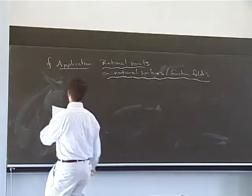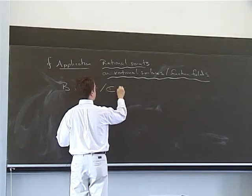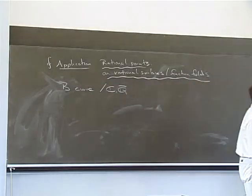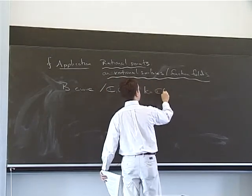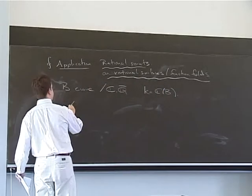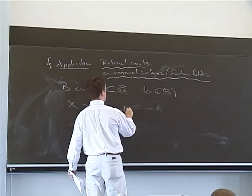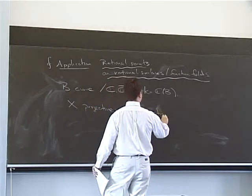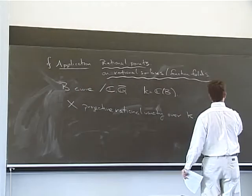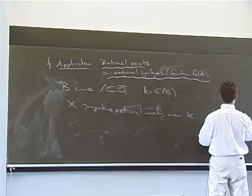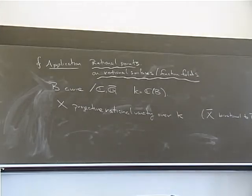So here's the basic setup. Let B be a curve over the complex numbers, or Q bar over some algebraic closed field. Let K be the function field, say C join B. And let X be a projective rational variety over K. And by rational I mean that X K bar is birational to P2. It's rational after passing to the algebraic closed field.